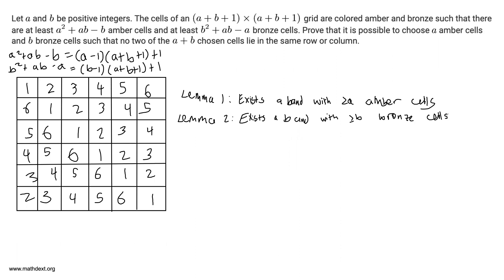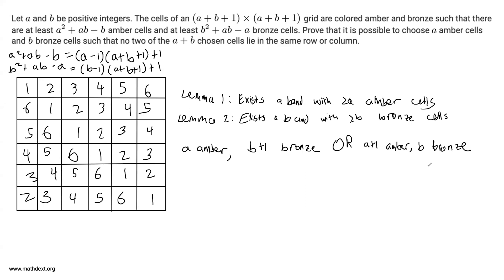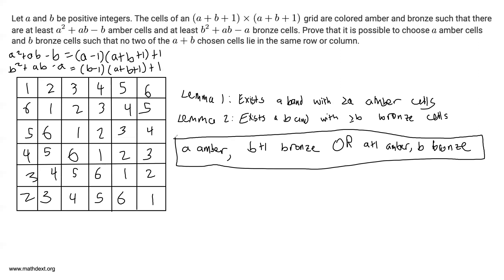Now that we've sorted those two things, I'm going to say: if I have a band with A amber cells and B+1 bronze cells — since the sum must add up to A+B+1 — or a band with A+1 amber and B bronze, then I am done. Because if a band has A amber and B+1 bronze, I consider the A amber cells and all but one of the bronze cells; that's A amber and B bronze, and since they're in a band, no two cells lie in the same row or column. Similarly for A+1 amber and B bronze.